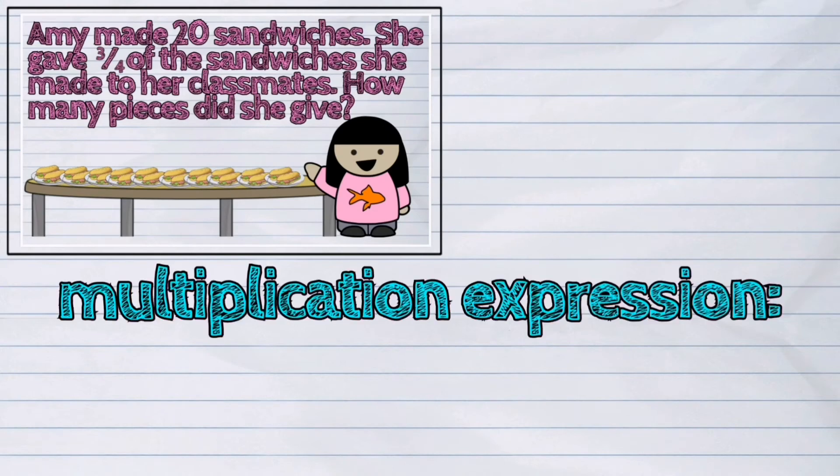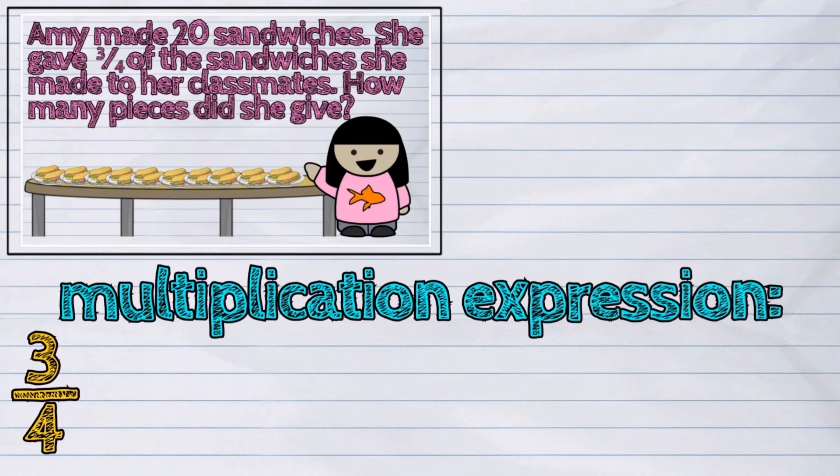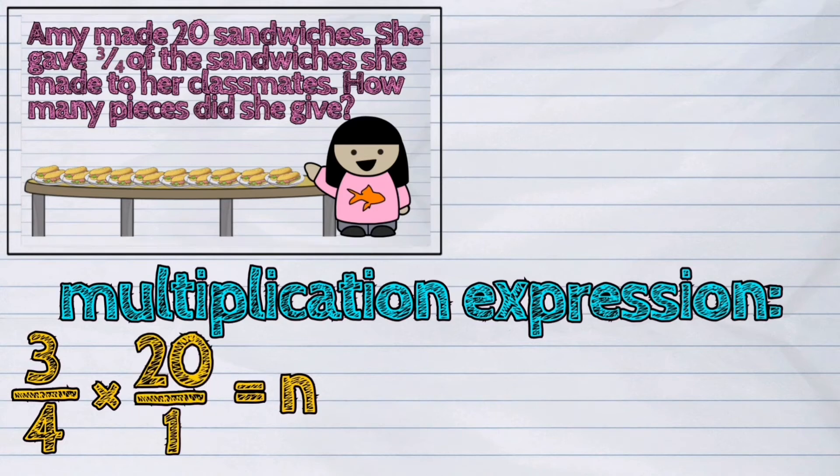Again, let's write the multiplication expression, which is 3 fourths times 20. We can also put a denominator of 1 under the number 20 for an easier solution. So, it's 3 fourths times 20 over 1.